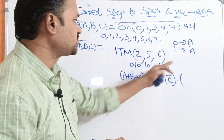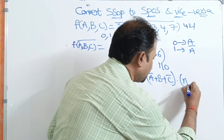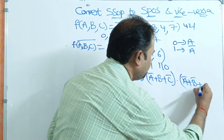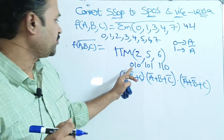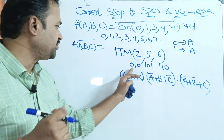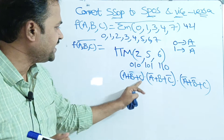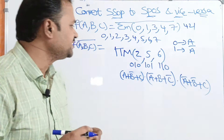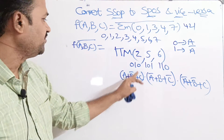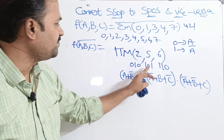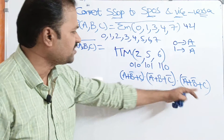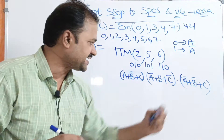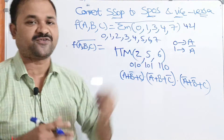For maxterm 6 (binary 1,1,0): 1 means complement term — A bar plus. 1 means complement — B bar plus. 0 means actual term — C. So this is nothing but the expression in SPOS form. In this way, we can convert the expression in SSOP to SPOS form.